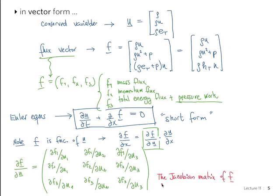So this is the matrix, which is, if we denote by the letter A, it allows us to write the whole equation as dU/dt plus A dU/dx equal to 0.